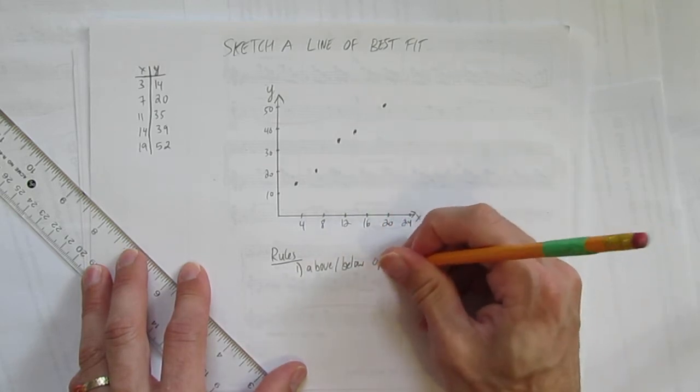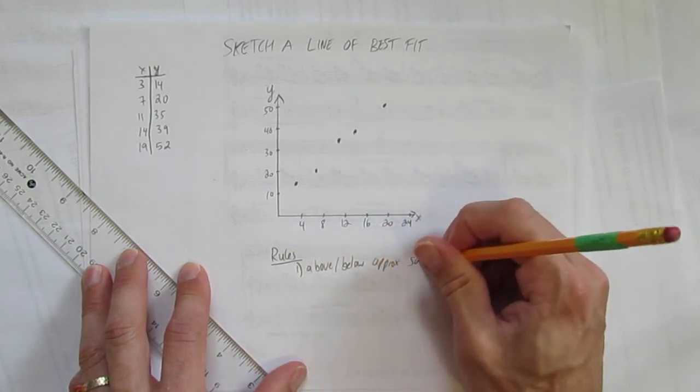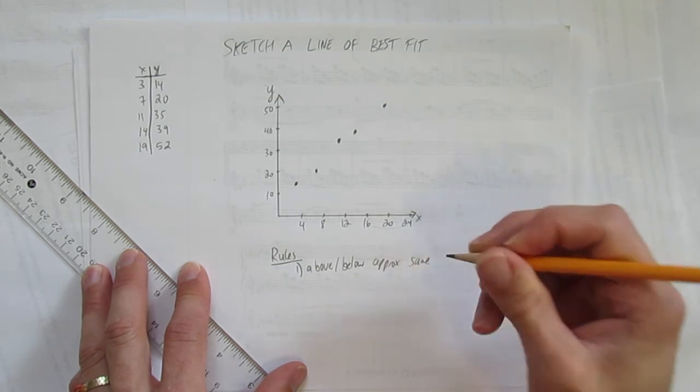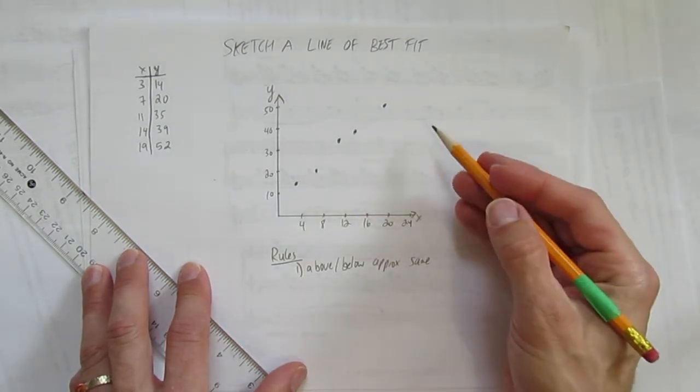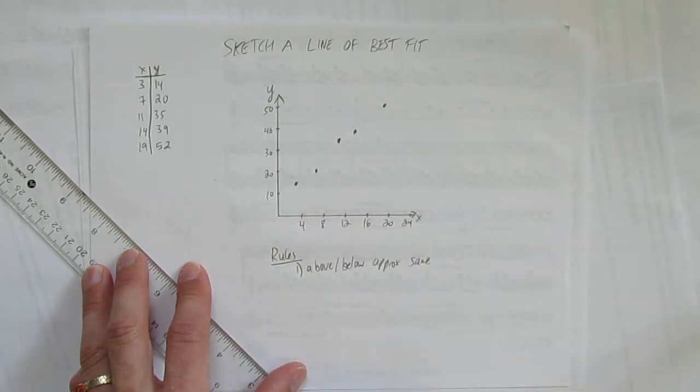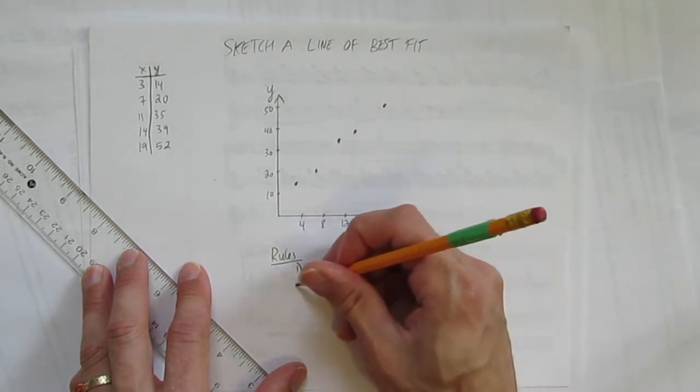Should be approximately the same. You should have approximately the same number of dots above and below, so you could have like two above, three below, but not like one above, four below. Rule one, same above and below.